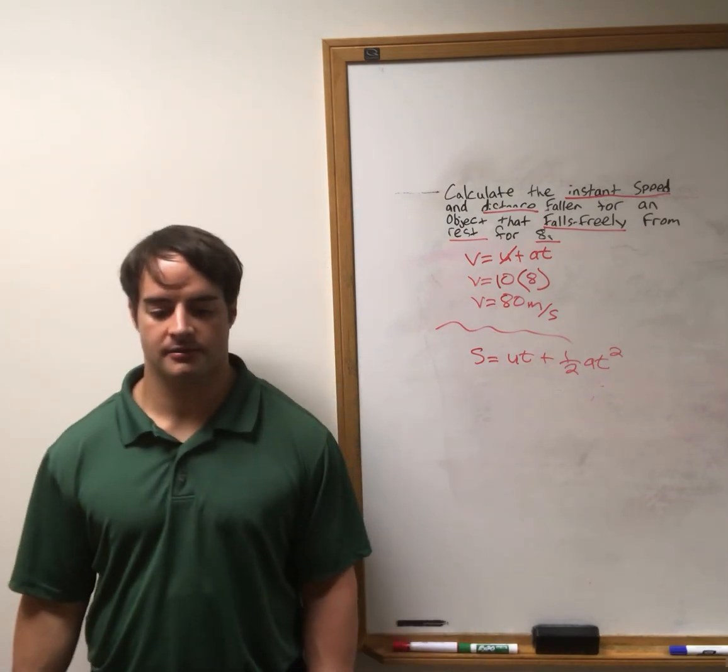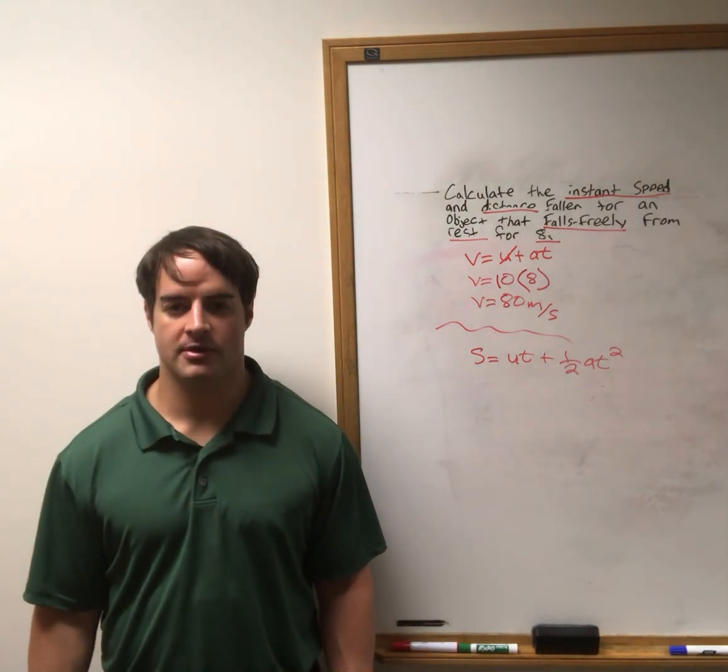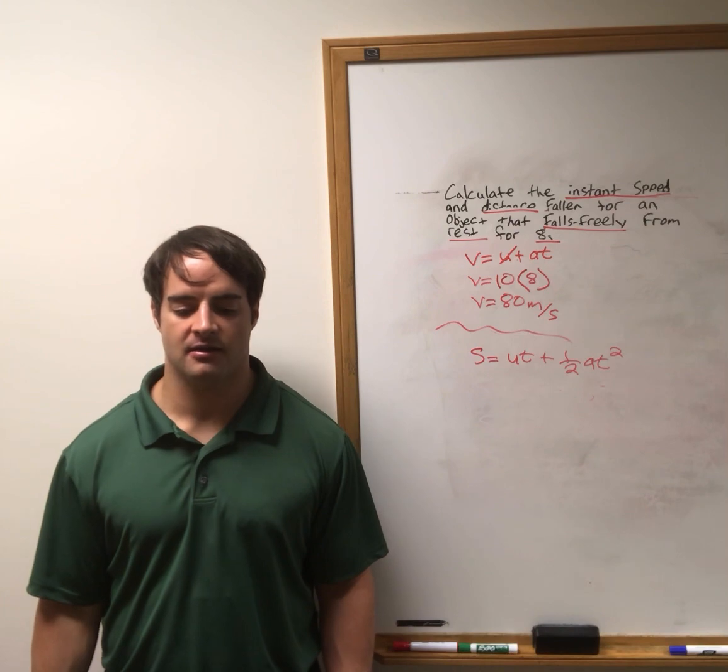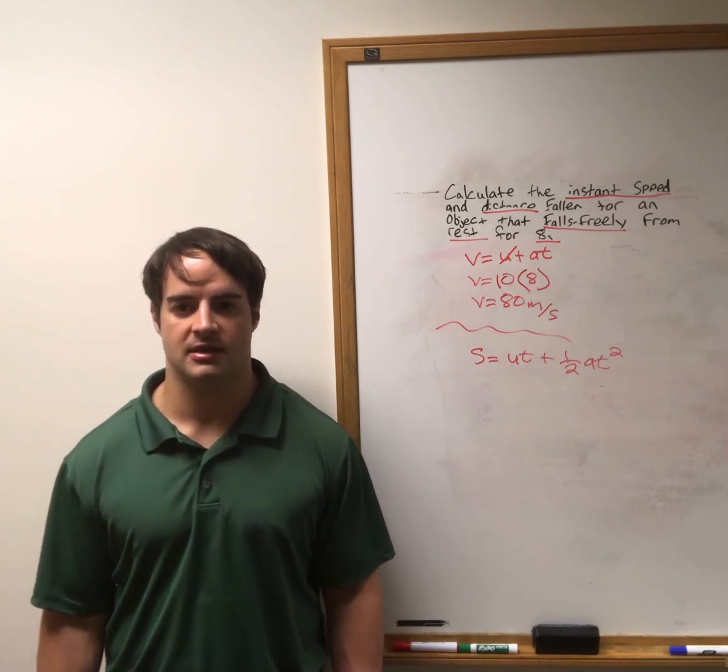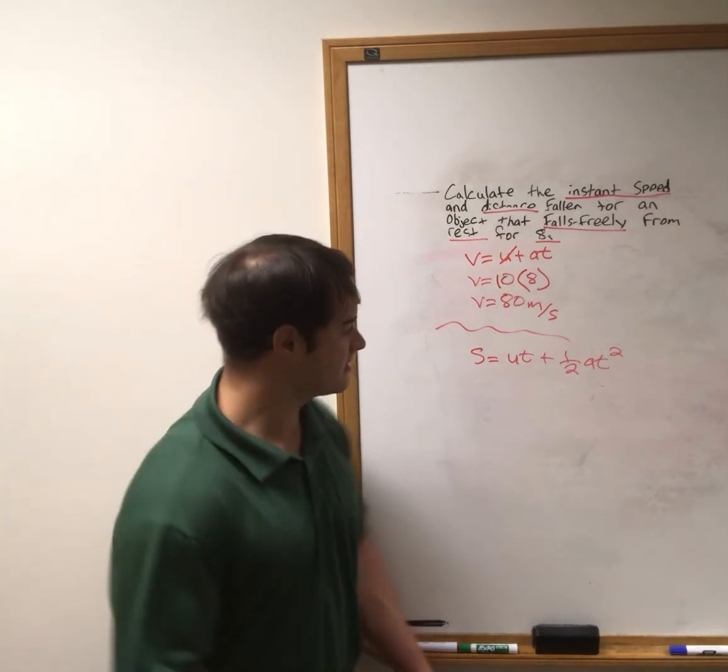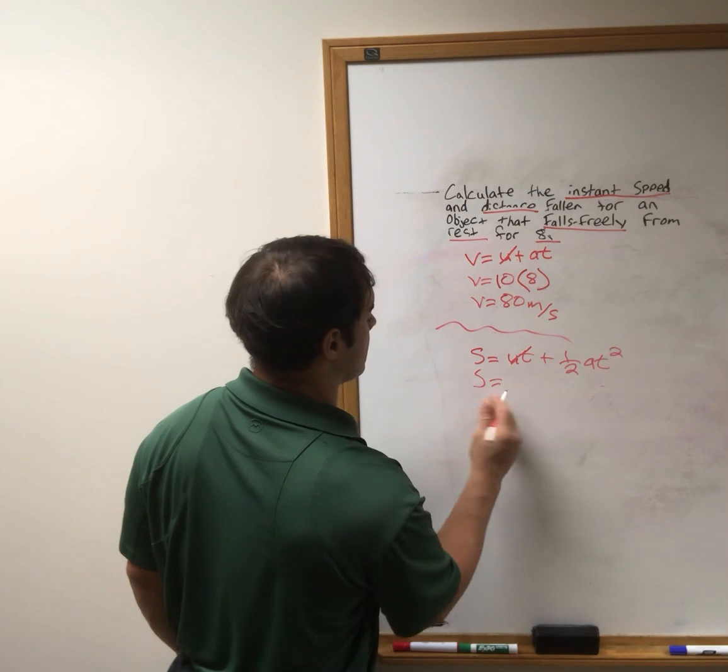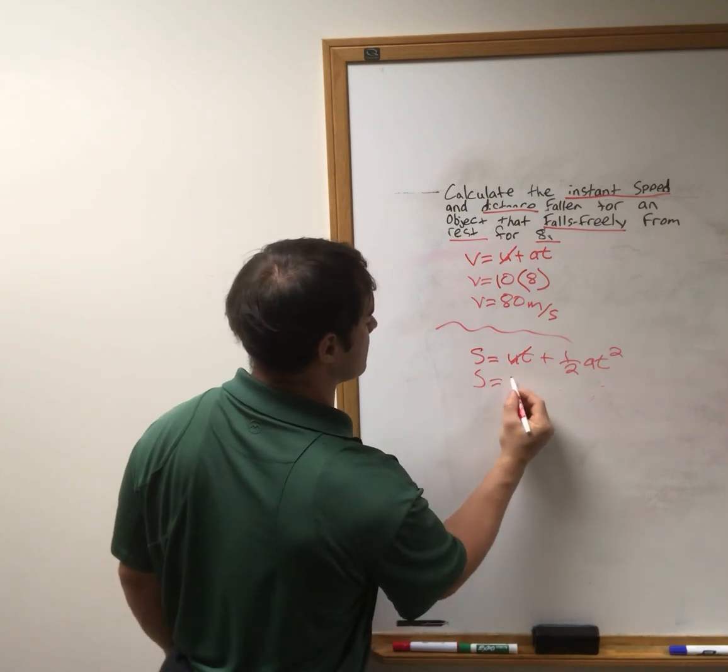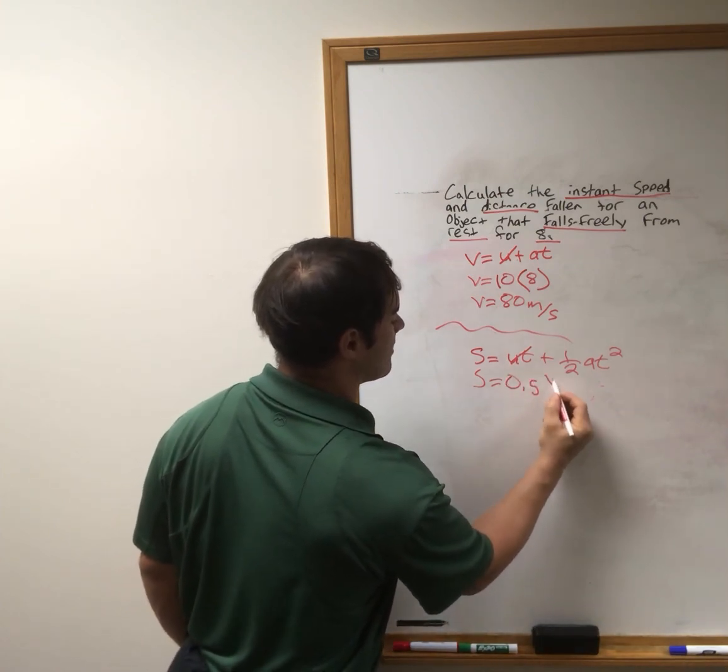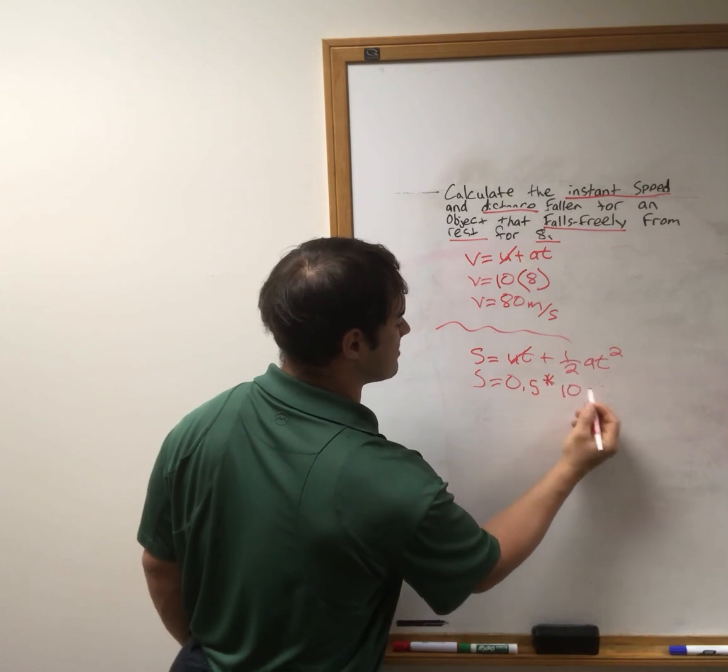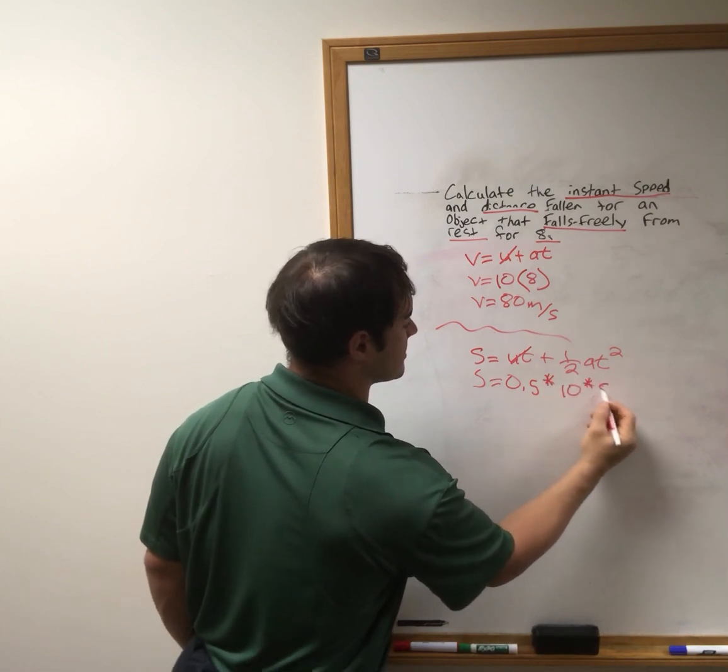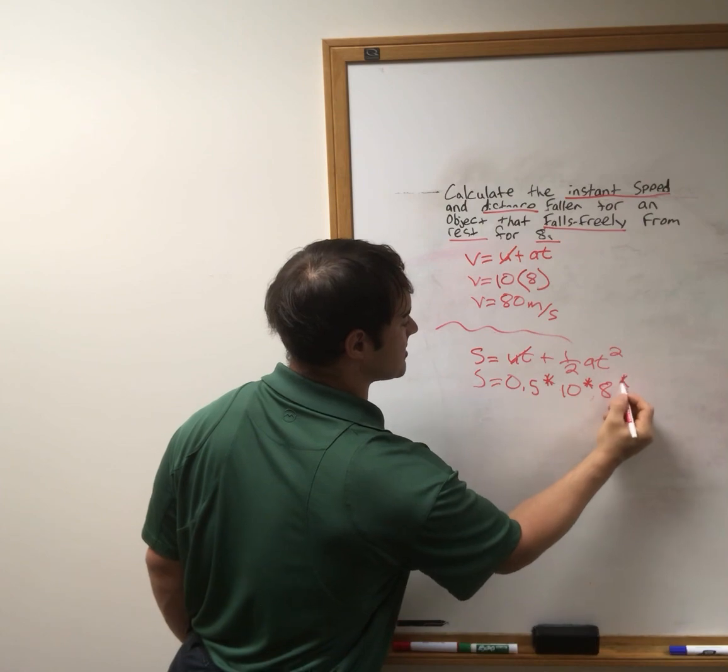Okay, and again, we're going to simplify the equation and we can cancel out the initial velocity. So now the distance equals point five times ten, times eight, times another eight.